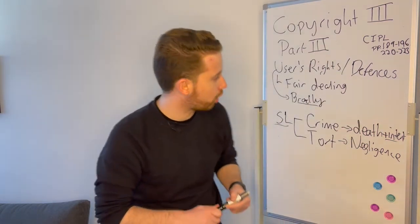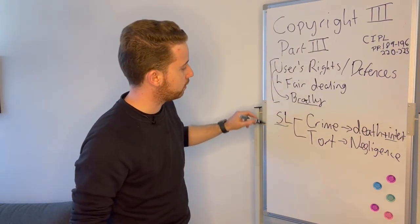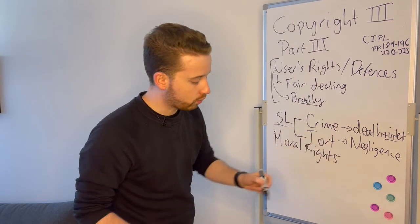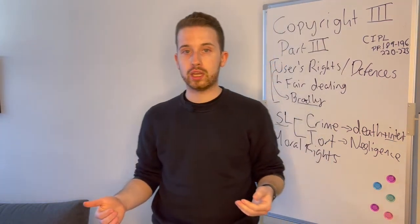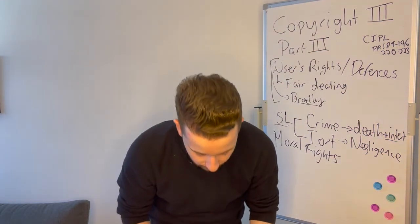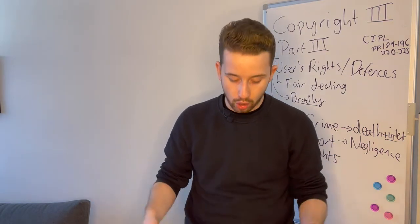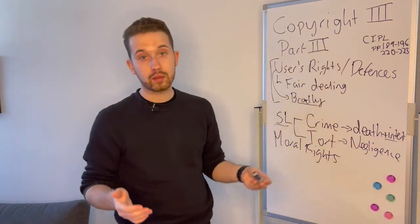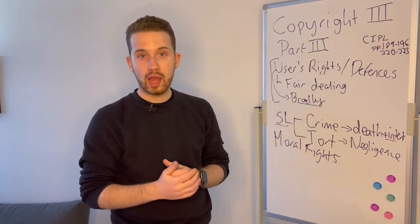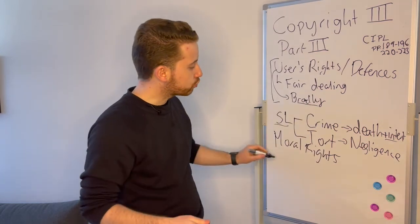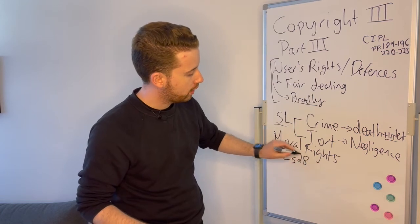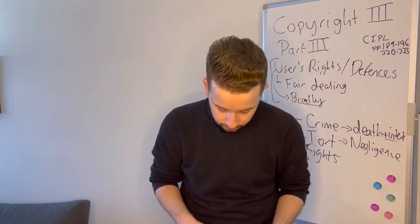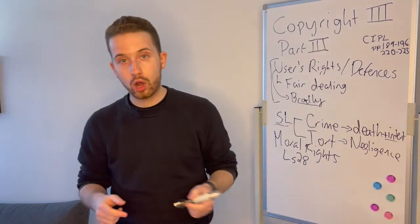Moving on to our last topic — moral rights. We're done with users' rights and defenses. Most of the copyright regime is concerned with economic, not moral rights — protecting the legitimate commercial monopoly of the copyright holder. But the Copyright Act does protect moral rights, under a different, more restrictive regime with different rules. That's under section 28. The standard is different because there's a clause requiring the action to be 'to the prejudice of the honor or reputation of the author.'